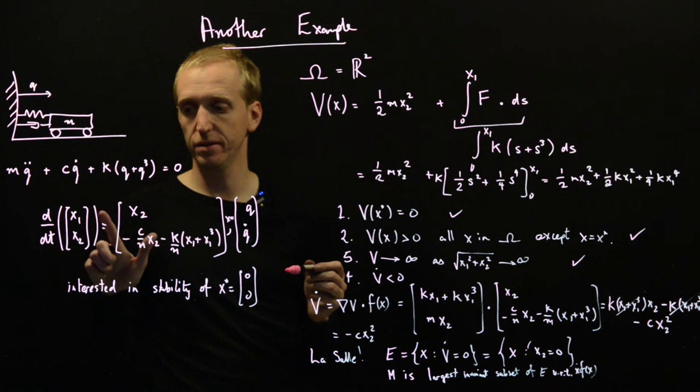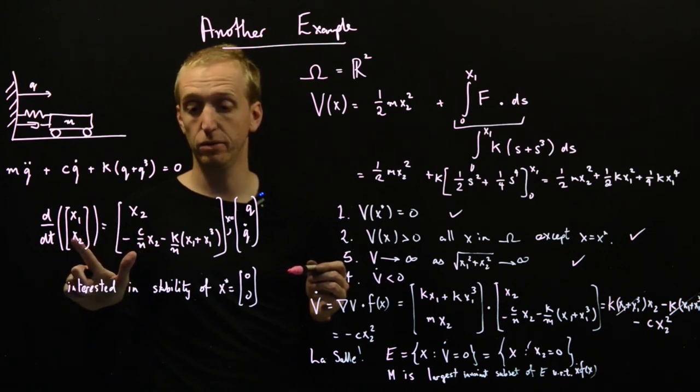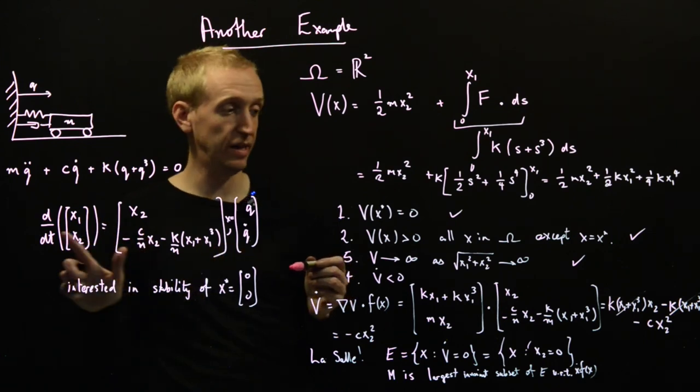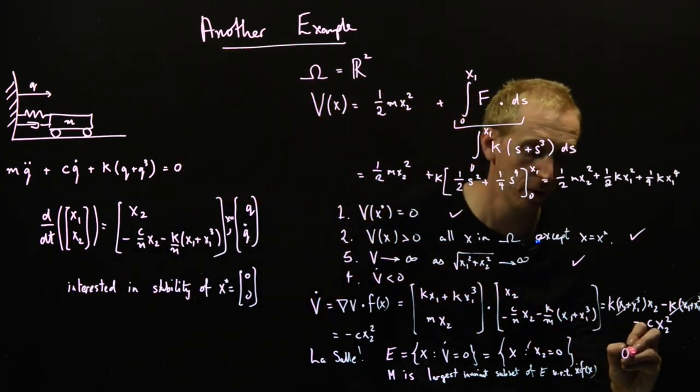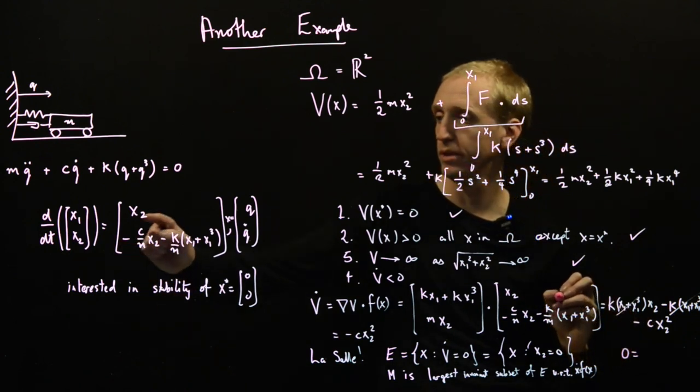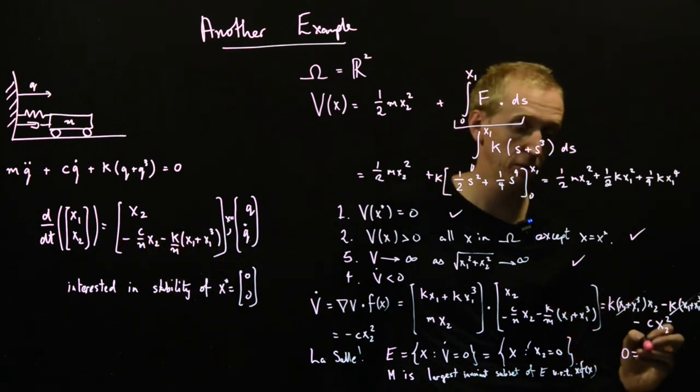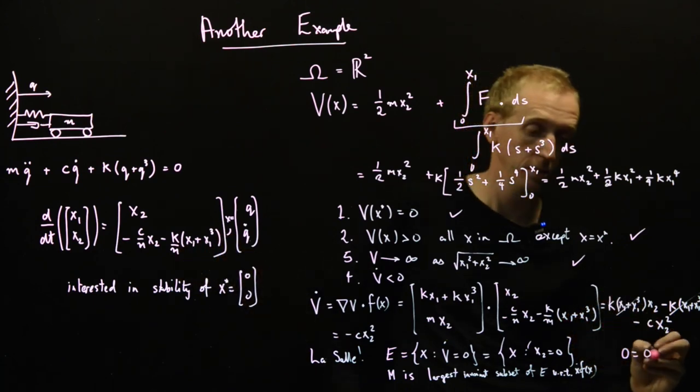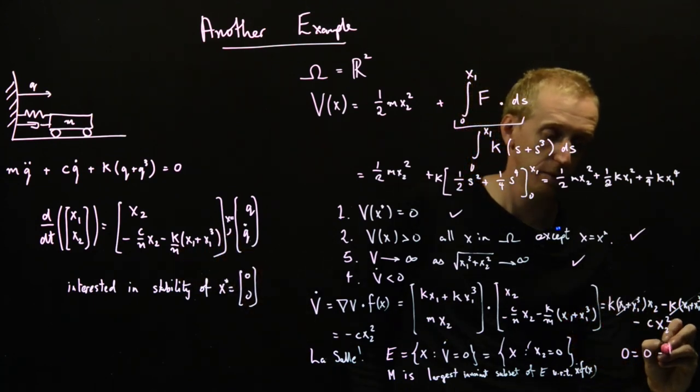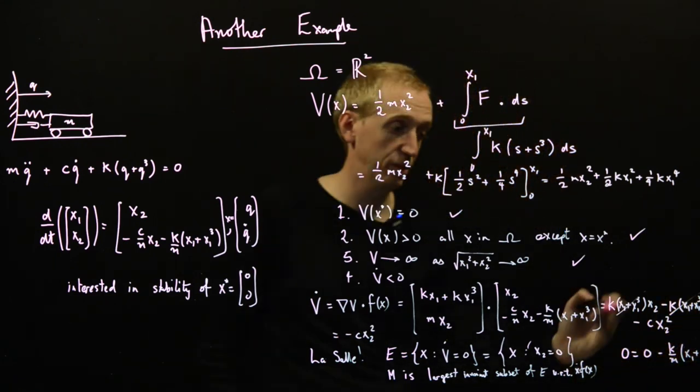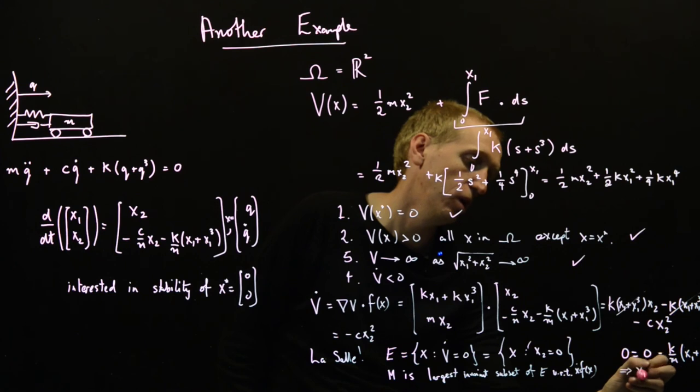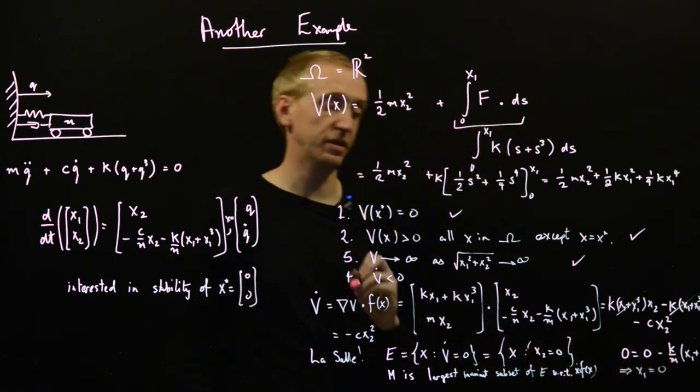We substitute in here, and we find out that this tells us that x2 dot is equal to zero, which is equal to this term here, that x2 is zero. And then minus k over m (x1 plus x1 cubed). And once again, we see that this implies that x1 is equal to zero.